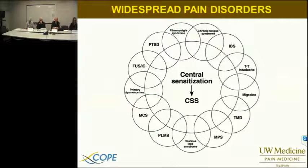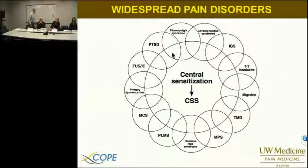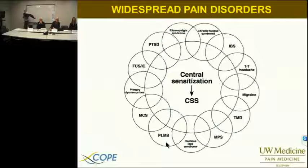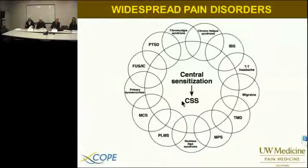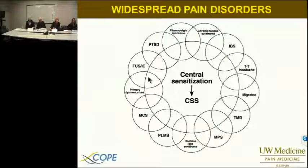Widespread pain disorders, otherwise known as central sensitization — from Muhammad Yunus' 2007 publication, by a rheumatologist — include fibromyalgia, chronic fatigue syndrome, post-traumatic stress disorder, chronic bladder pain syndromes, pelvic pain syndromes, multiple chemical sensitivities, restless leg and periodic leg movement syndromes, myofascial pain, temporomandibular pain syndromes, migraine, tension headache, and irritable bowel syndrome. This is the dreaded positive review of systems — which I embrace, because it allows me to make a diagnosis of central sensitization and get a running start on managing our patients. All of these are treated the same way, which actually simplifies your understanding when patients have a widespread pain disorder.